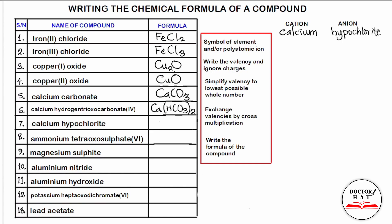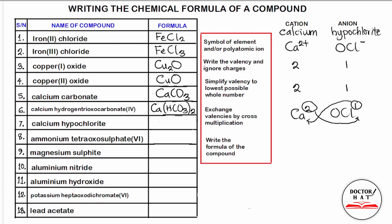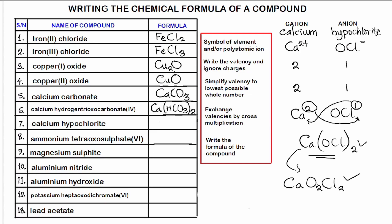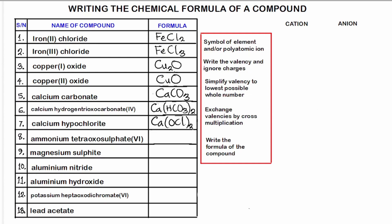Number seven: calcium hypochlorite. The formula for calcium is Ca²⁺ and for hypochlorite is OCl⁻. The hypochlorite ion has one fewer oxygen atom than chlorate. The valency of calcium is 2 and hypochlorite is 1. We cannot simplify 2:1, so cross-multiplying gives Ca(OCl)₂, where the 2 belongs to the whole hypochlorite ion. This can also be expanded as CaO₂Cl₂.